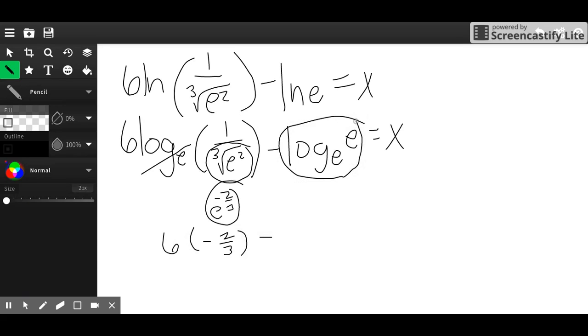Minus. Then I ask myself here, e raised to what is e? Well, 1. So minus 1. 6 times negative 2 thirds, that's negative 4, minus 1, equals negative 5. Negative 5 is your answer.